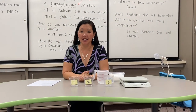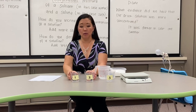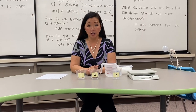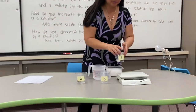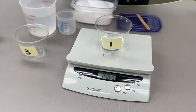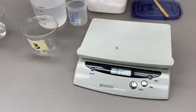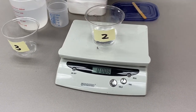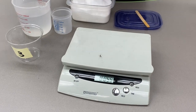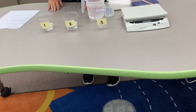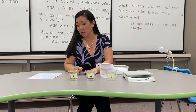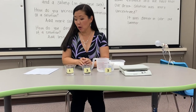Now we're going to weigh our solutions. I'd like you to make a prediction: do you think there will be a difference in the mass between cups one and two? Do you think it would be a large difference or a small difference? Let's go ahead and weigh cup number one — it weighs 65 grams. And cup number two weighs 70 grams. If you predicted we would find a difference in mass, you are correct — it's a five-gram difference between cups one and two.